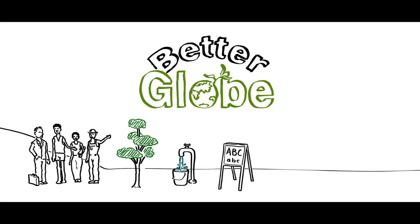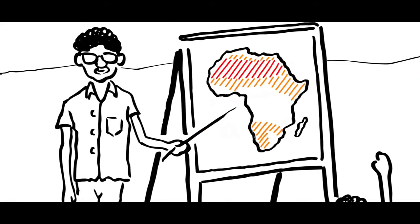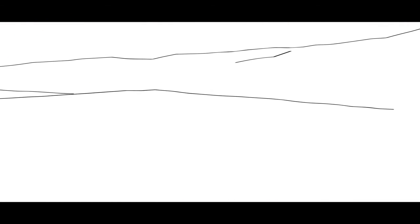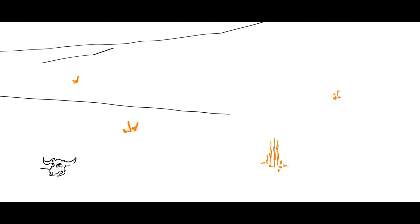Unlike all other forestry companies, Better Globe plants trees in semi-arid areas, which gives the worst possible circumstances for forestry and the toughest living conditions for people. There are no jobs, schools, or infrastructure.